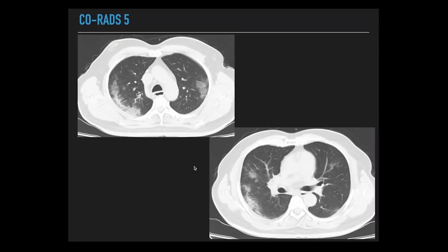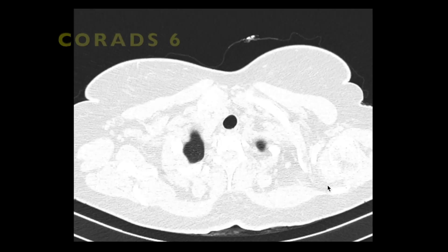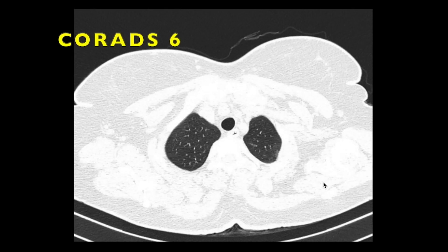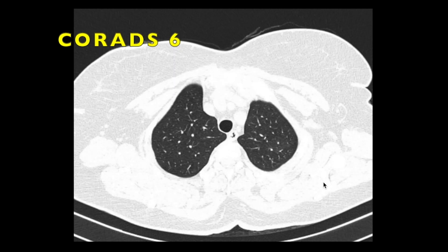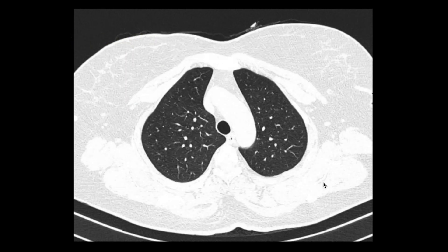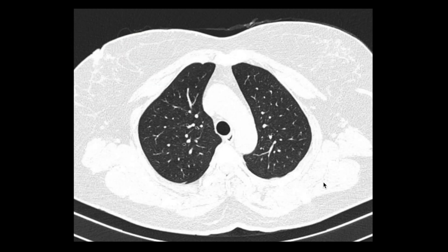This patient presented with chief complaints of fever and sore throat. Screening HRCT was done, showing multiple peripheral subpleural ground glass opacities. With these imaging findings, we raised a high level of suspicion and gave it CO-RADS 5, which eventually turned out to be an RT-PCR positive case of COVID-19.